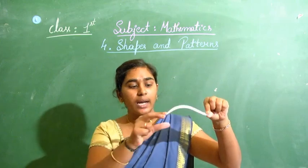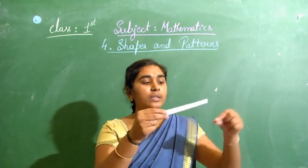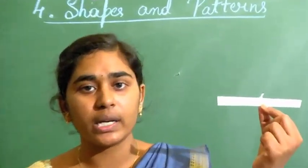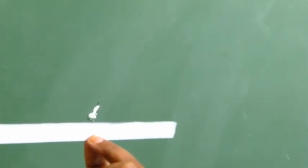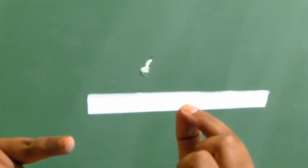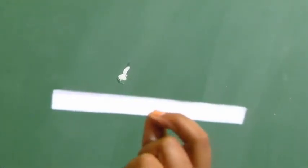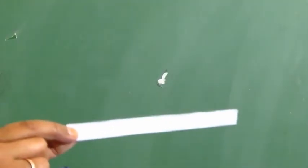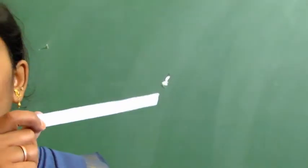This piece of paper is very thin and it looks like a rectangle. You can see these two are long sides and this one and this one are short sides — it is very thin and is considered as a rectangle.